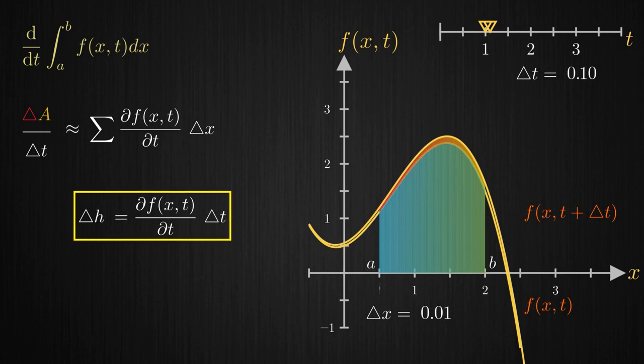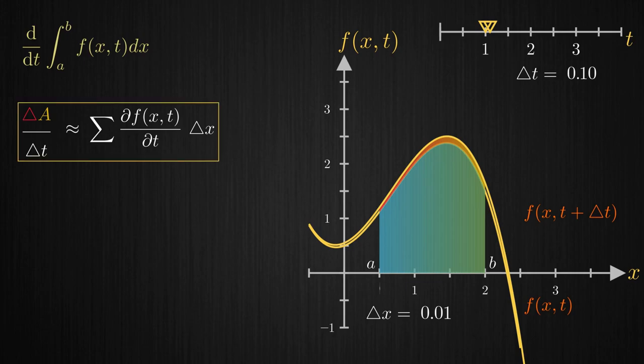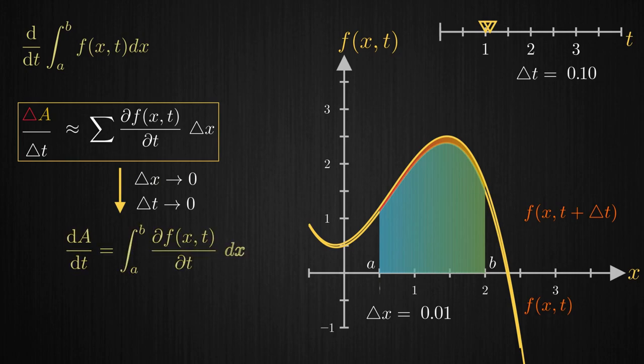To incorporate the fact that Δx and Δt are both meant to approach 0, we use a different notation replacing the deltas with ds and sigma with the integrand and the limits. And there it is the Leibniz integral rule for the case of constant limits.